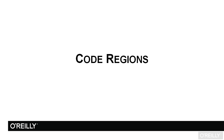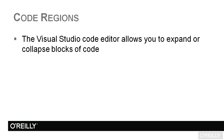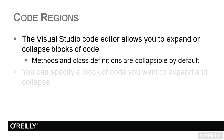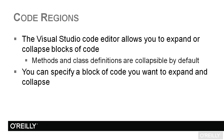Visual Studio provides a functionality called Code Regions that you need to be familiar with. The Code Editor gives you the ability to automatically expand or collapse blocks of code. Methods and class definitions are all collapsible by default. You can also specify a custom block of code to expand and collapse using the region keywords—region and end region—to build your own blocks.